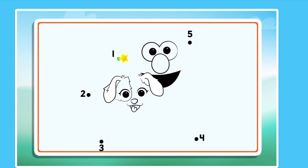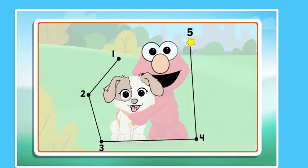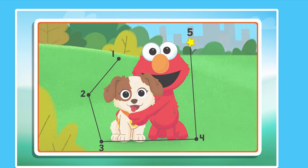Connect the dots to reveal the picture. Start at the number 1, then draw a line to the 2, 3, 4, just one more, 5. Wow, what a cool picture.